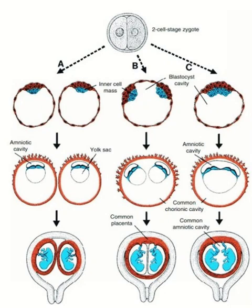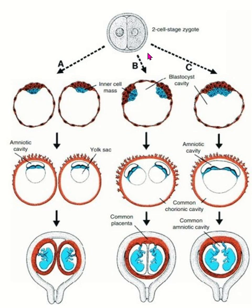Assalamualaikum. In this video, I explain the relation of fetal membrane in monozygotic twins. What is a monozygotic twin? This twin develops from a single zygote. At the two-cell stage, when cells separate and form two individual fetuses, this is known as identical twin or monozygotic twin. Mono means one. This twin develops from one zygote and their sex, phenotype, and genotype are the same.